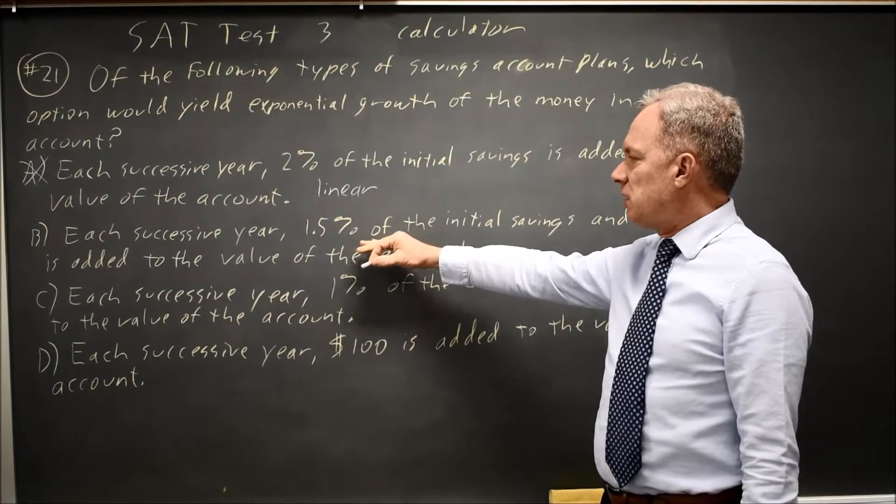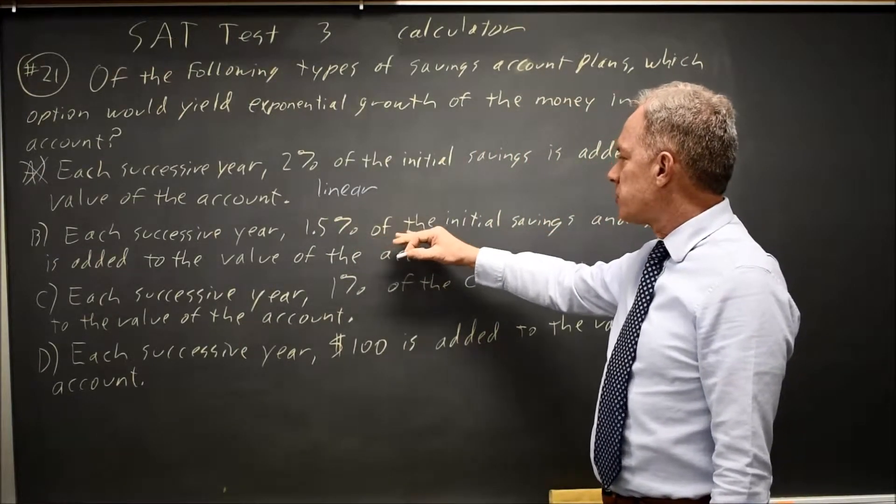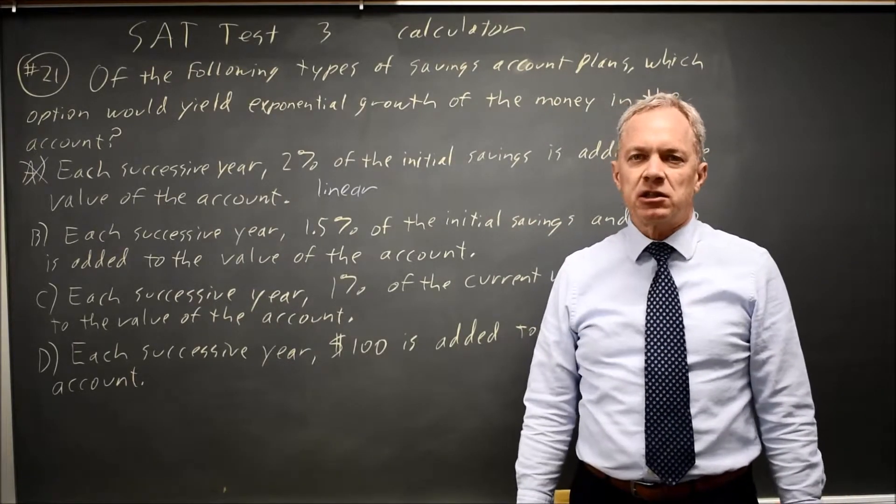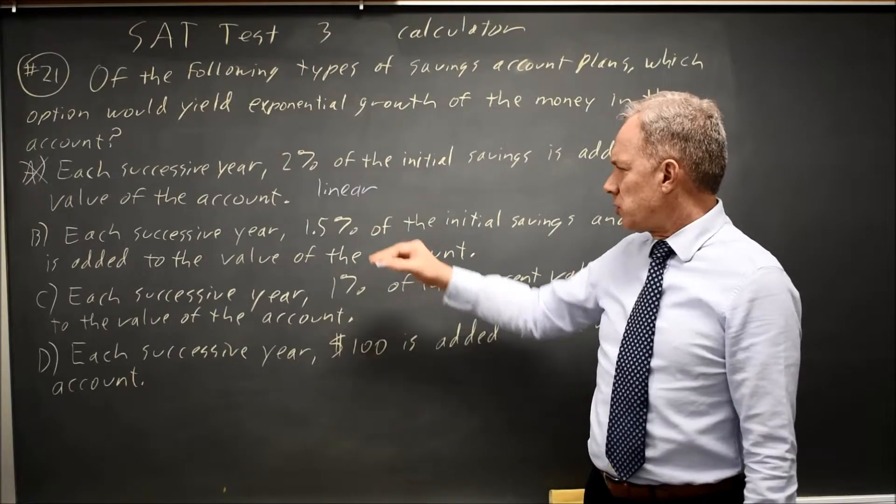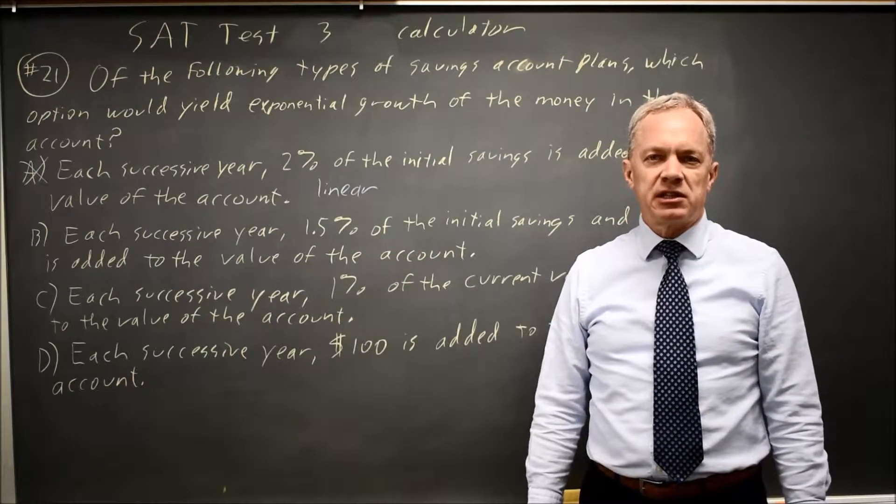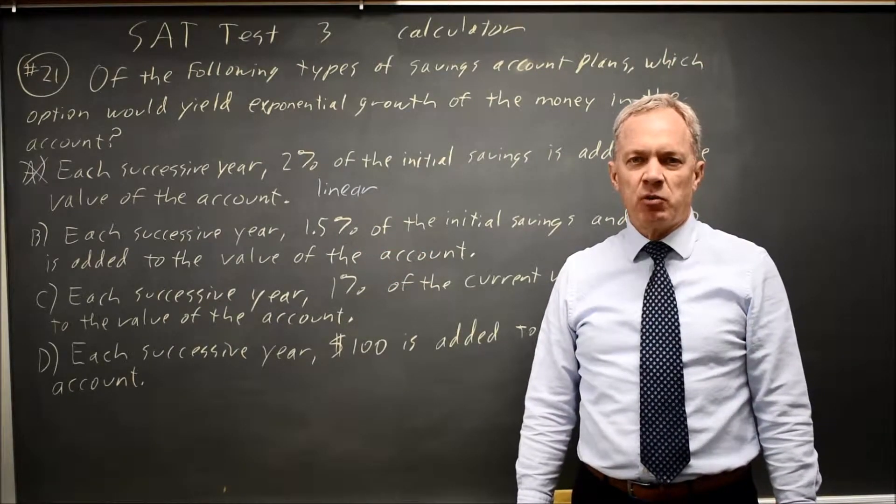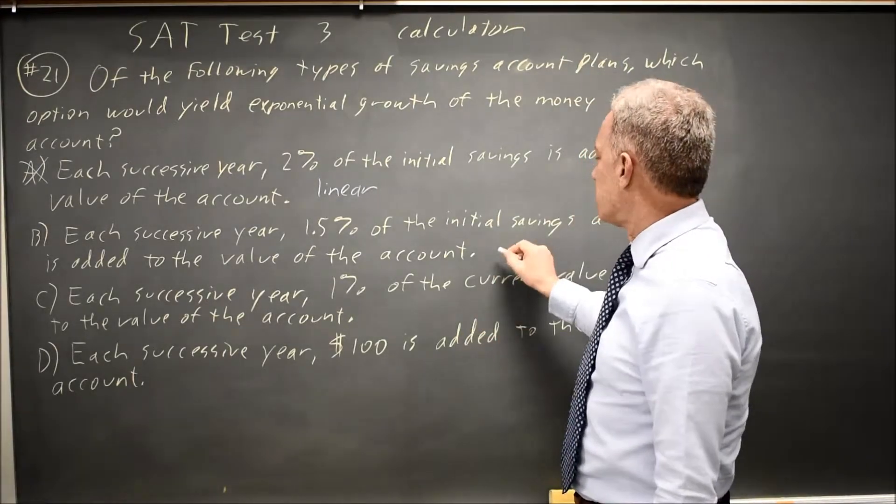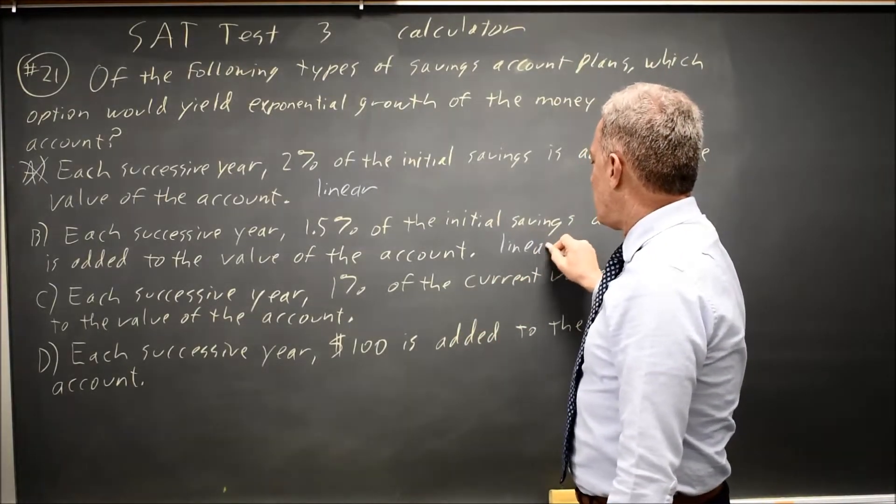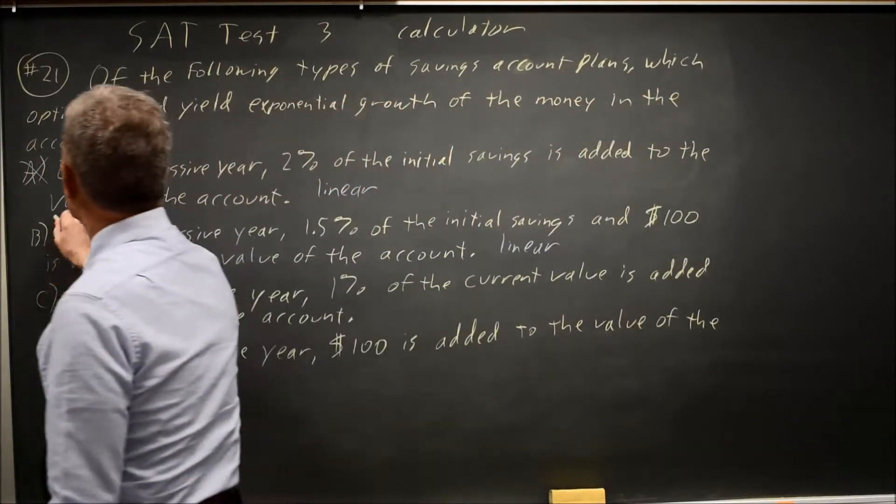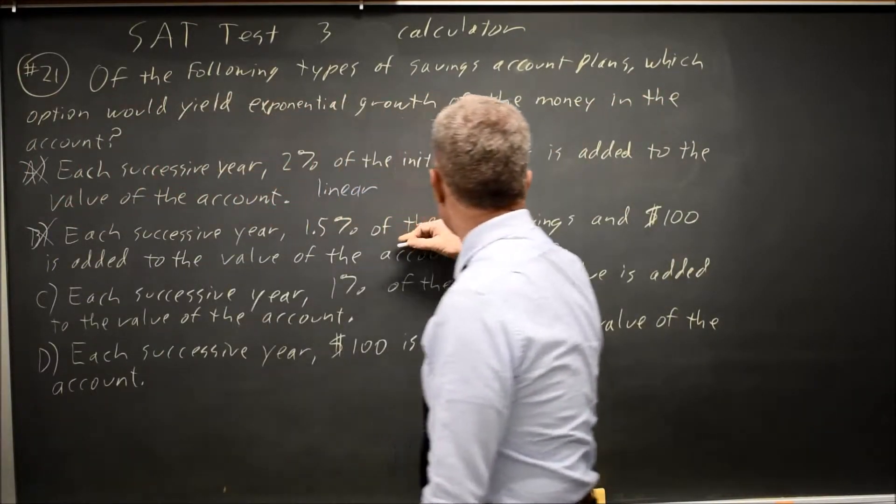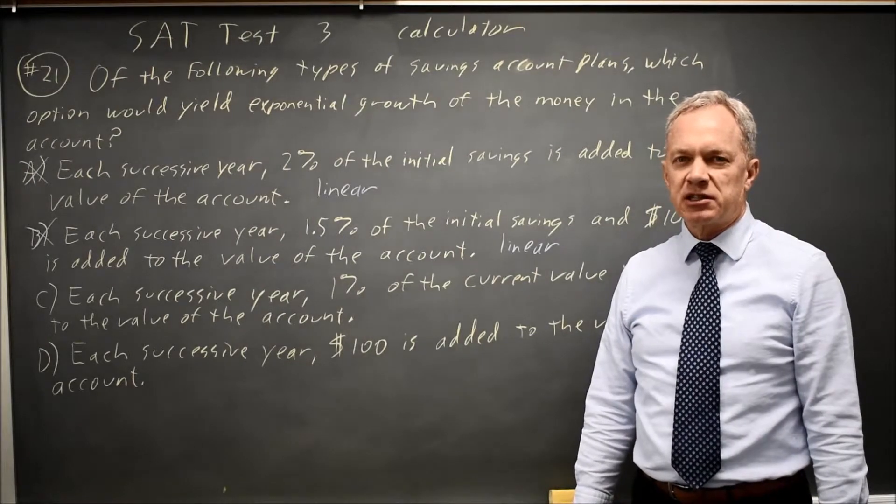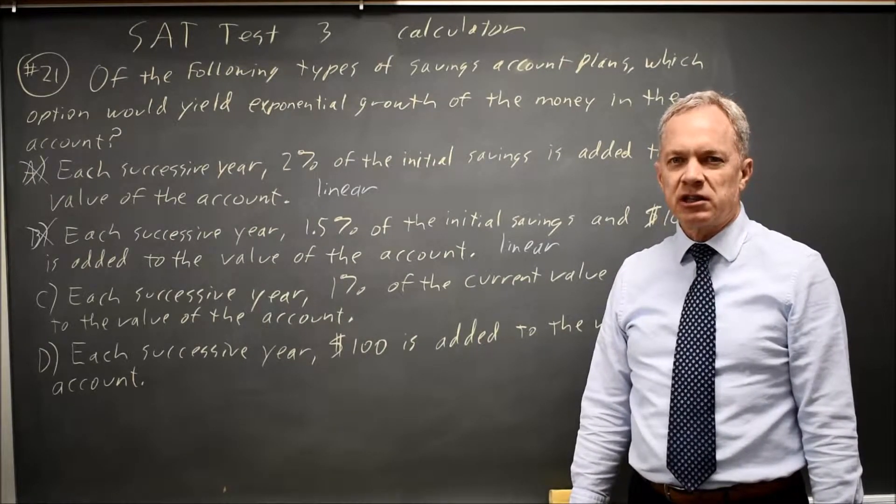Choice B, each successive year, 1.5% of the initial savings and $100 is added to the value of the account. 1.5% of your initial savings is a constant. If you add $100 to that constant, you still get a constant. So again, we have linear growth. We are adding a constant amount each year because the percent is taken of the initial savings. And a fixed percent of the initial savings is a constant amount even if you add $100 to that.